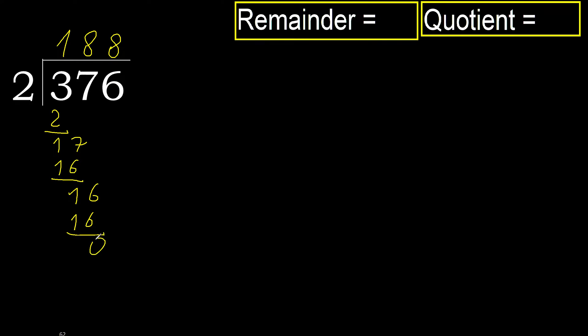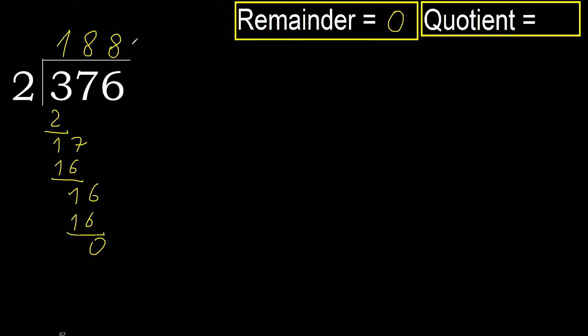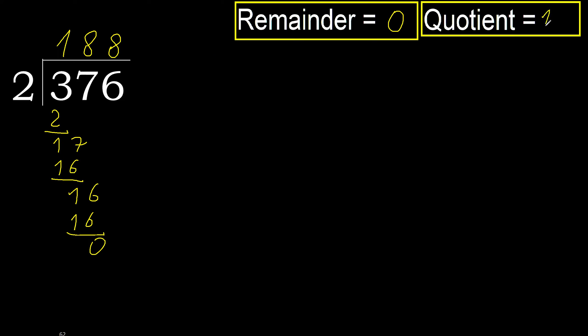Subtract. The next digit has no remainder, therefore finish. 376 divided by 2 is 188.